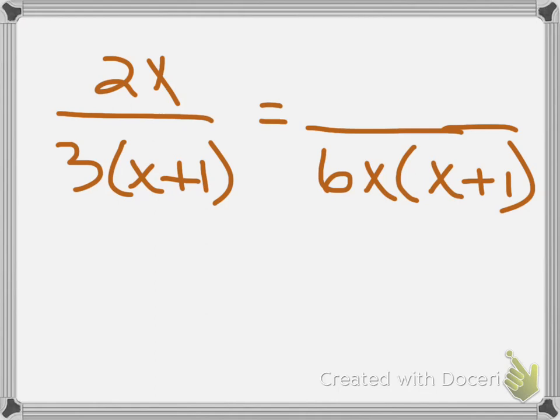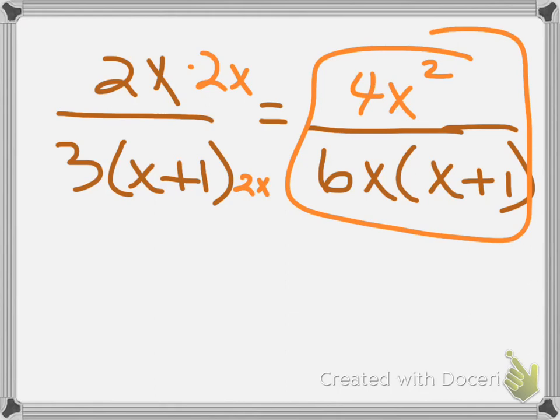So we ask ourselves that same question. 3 times the quantity x plus 1. What do I multiply so I get 6x times the quantity? 2. Yes, 2 and something else also. I'm going to actually change colors. 2. That'll give me the 6, but what about this extra x? You got it. Multiply by an x. So we're going to multiply by 2x and 2x. So we'll have a total of how much up here? 4x squared. Very good. And that is my equivalent fraction.